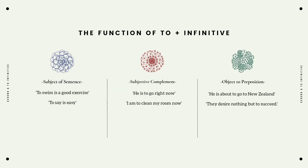The first function of to-infinitive is subject of the sentence. For example: 'To swim is a good exercise' and 'To say is easy.' The second function is subjective complement. For example: 'He is to go right now.'